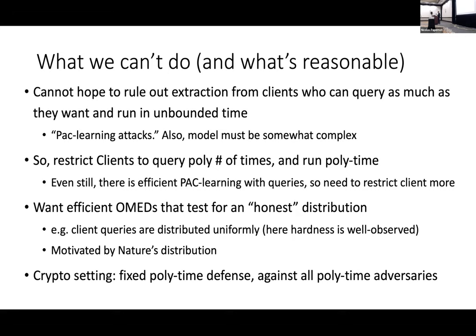This is different from the normal setting where the learner can arbitrarily synthesize queries. One example to keep in mind is polynomial-size Boolean decision trees, where this applies. So we need to restrict the client even further — this is where the OMAD comes in. The OMAD wants to test for an honest distribution, motivated by the natural distribution where the client gets unlabeled examples from some natural distribution in the real world and wants to get those labeled. This is also a typical cryptographic setting: we aim for one efficient defense running in fixed polynomial time against all polynomial-time adversaries.